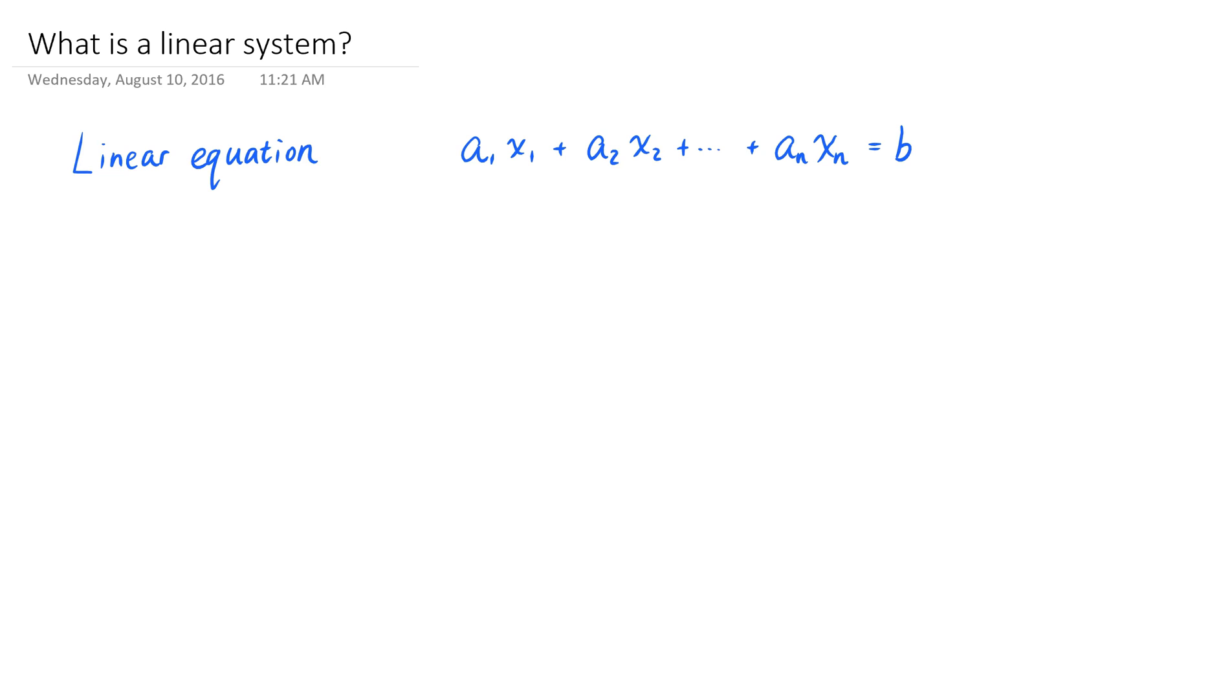So as we've learned in that prerequisite video, a linear equation about n variables, aka unknowns, is an equation of this form. For example, here's an example of a linear equation about 4 unknowns: x of 1, x of 2, x of 3, and x of 4.